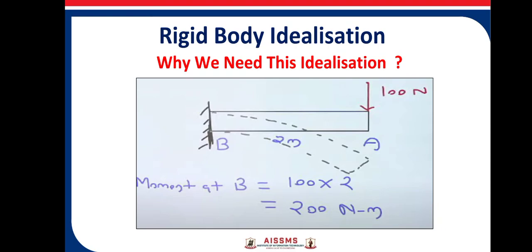Let's say I am applying force of 100 Newton at end point A and this point B, and there is a distance of 2 meters between point A and B. If you ask to calculate moment at point B, what you are going to do? I want to calculate the moment at point B. So, what you are going to do?